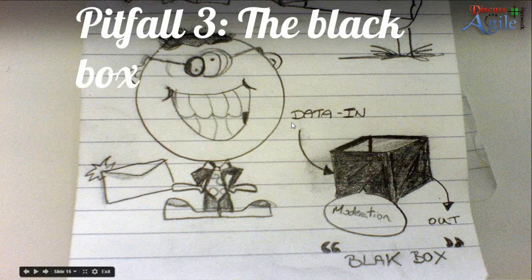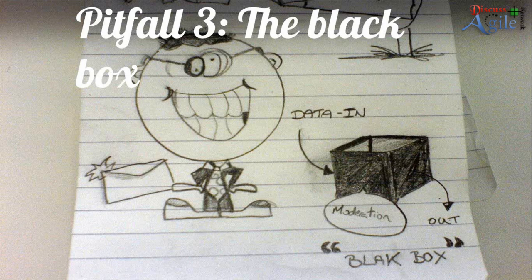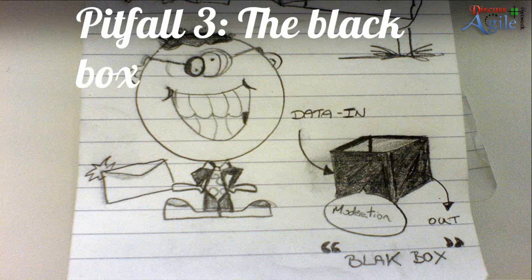The third pitfall is the black box. This happens specifically with more traditional waterfall-style processes where a client sends requirements to a team in India, the team estimates and sets a delivery date, and then the client sits back and waits — and usually it doesn't come back on time or as specified. The client doesn't see what process the team is using or who is working on what. This is one of the major benefits of agile: it opens up towards the client so the black box no longer exists.